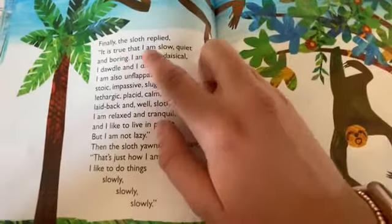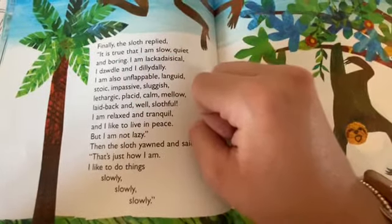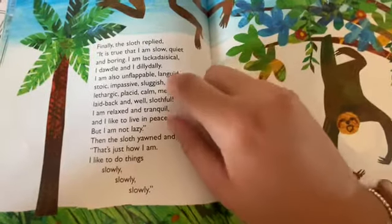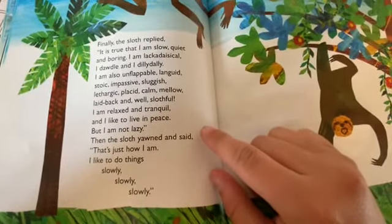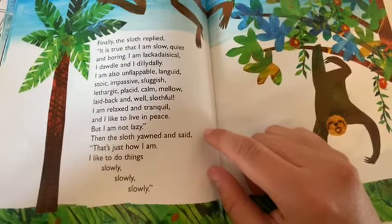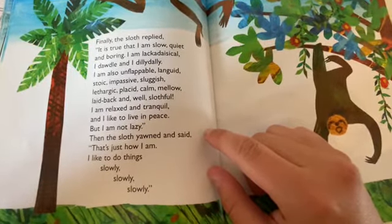It is true that I am slow, quiet and boring. I am lackadaisical, I dawdle and dilly-dally. I am also unflappable, languid, stoic, impassive, sluggish, lethargic, placid, calm, mellow, laid-back and, well, slothful.